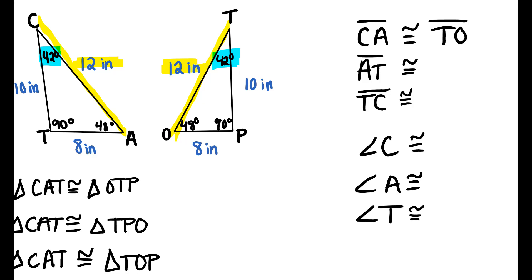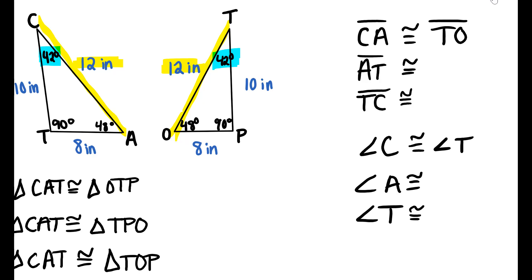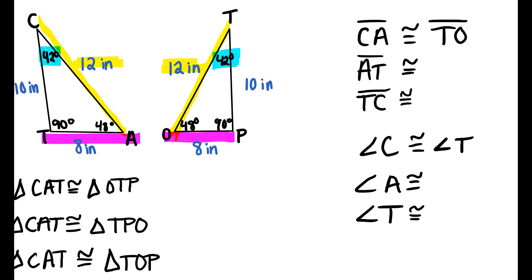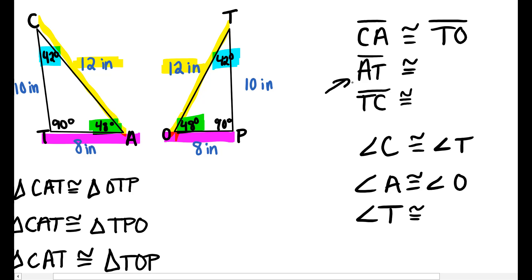Angle C is congruent to angle T. Side AT is 8 inches and side OP is 8 inches. Angle A is 48 degrees and angle O is 48 degrees, so angle A is congruent to angle O. If I start a side length with the letter A in the first triangle, I need to start with the letter O in the second triangle, giving us side OP.